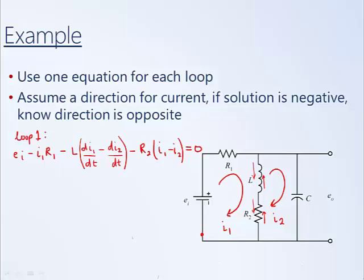We'll then apply the same approach for modeling loop 2. If I begin at this point and start to flow around the circuit in the direction I've defined I2, the first element I will come across is the capacitor. The drop across the capacitor is negative since it's a drop across that element. It's proportional to 1 over C times the integral of the current, where the only current flowing through this element is I2.